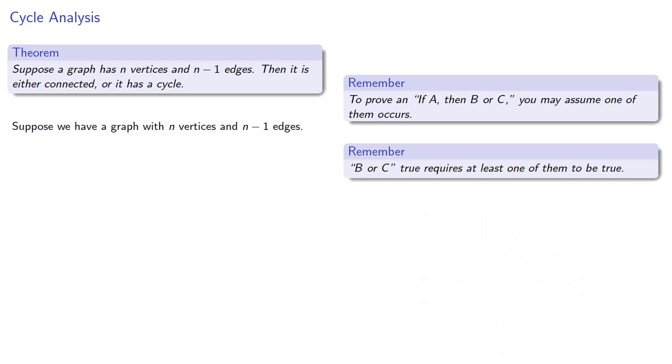So suppose we have a graph with n vertices and n-1 edges. If it's connected, we're done. Well, we do have to consider all possibilities, so suppose it's not connected.